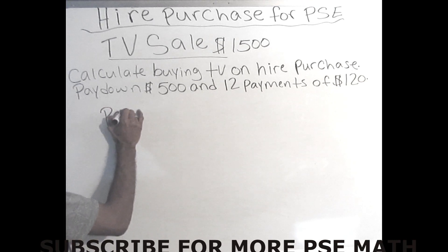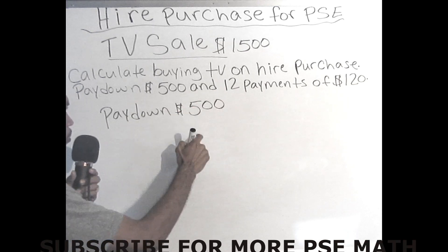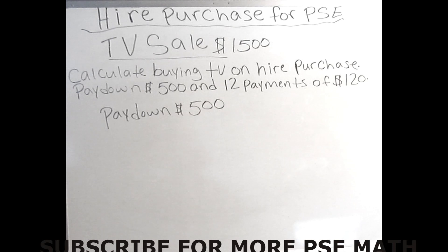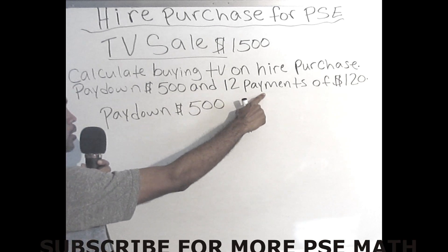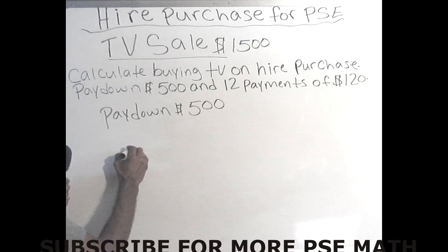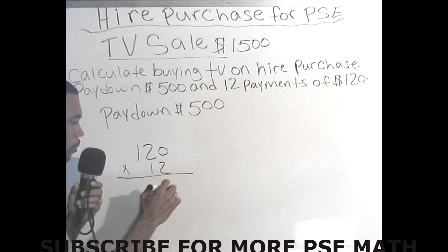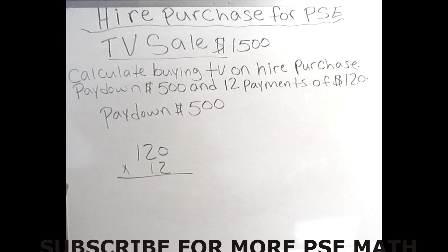When I went to the store I paid a deposit — that's very important — I give them $500 and I took home the TV. At the end you have to add that to whatever your 12 months total is, and that will give you your hire purchase price. After paying the $500 deposit, they gave me 12 months to pay off the product: 12 months of $120. So I need to multiply $120 by 12 months, then add the $500 deposit.